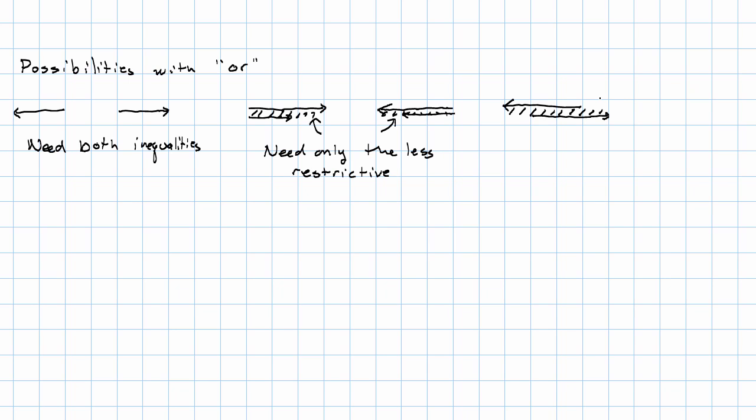Just like with AND then, there are four basic possibilities with OR. In this possibility, the arrows go off in different directions with a gap between them. We need both inequalities. In these two possibilities, we only need the less restrictive inequality. And in this possibility, every number is on one or the other of our arrows. Right? So in this possibility, all numbers are solutions.